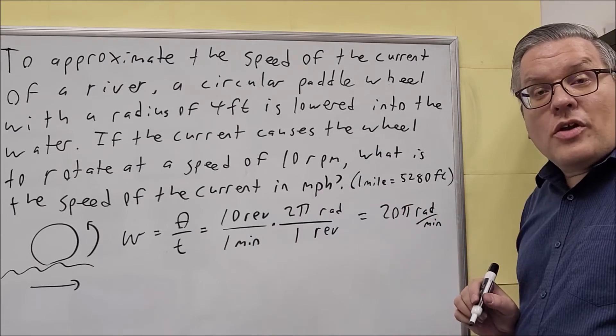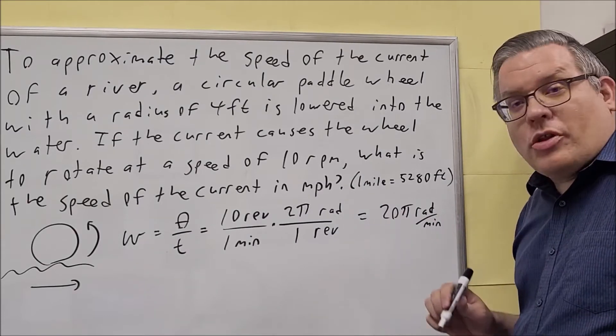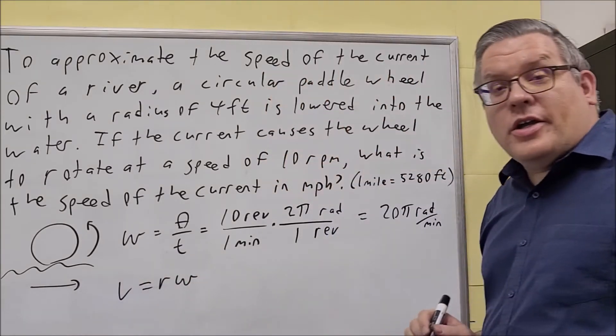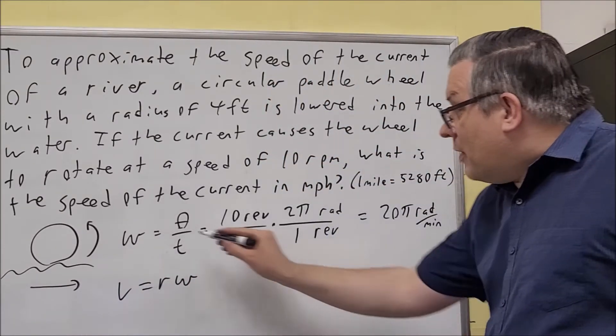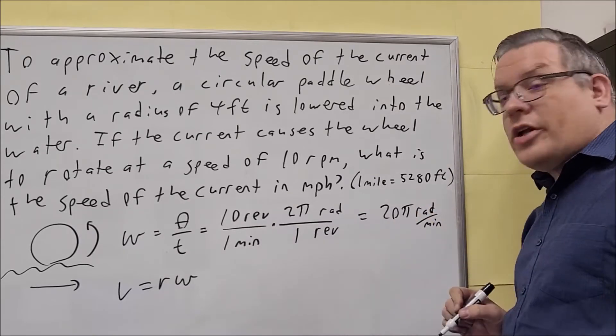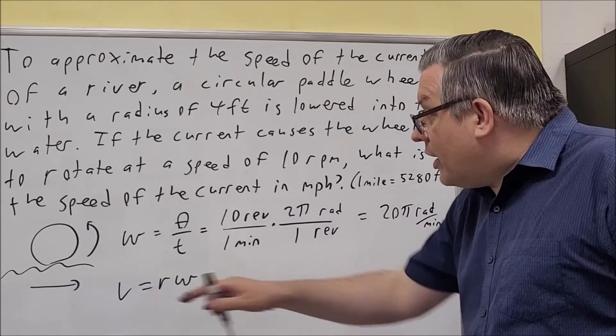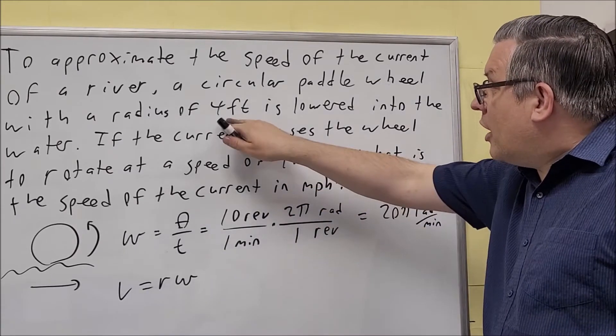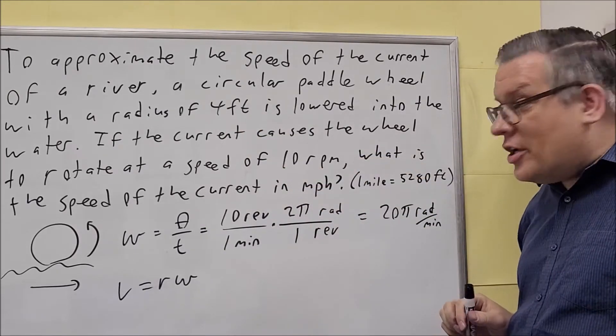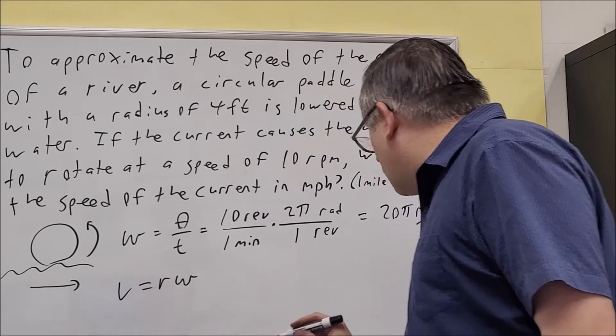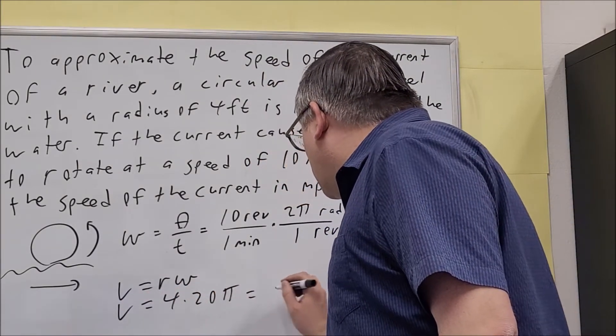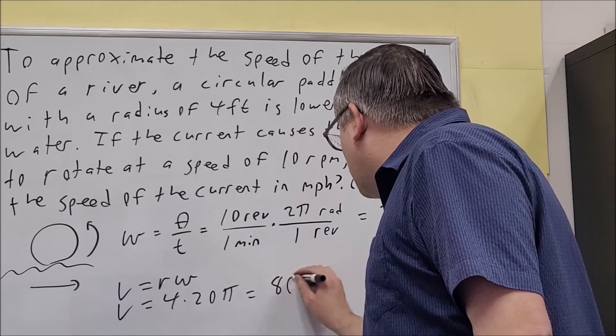Now we want to find the linear speed. The formula that we have for that is V equals r Omega. In this case the Omega we already found, that's 20π. Now the radius is going to be the radius of the water wheel which is what they already gave us is 4 feet. So for this one we're going to do V equals 4 times 20π and that's going to give us 80π.